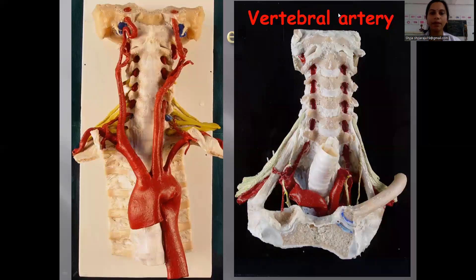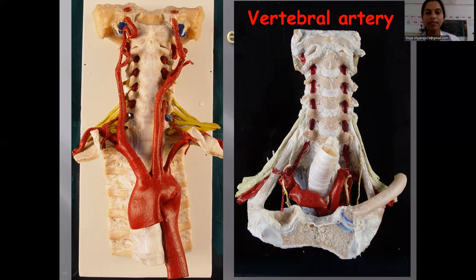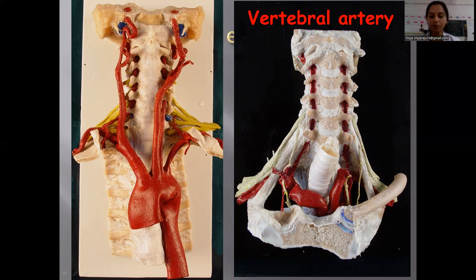Now coming to the vertebral artery: it arises from the first part of the subclavian artery and has four parts. The first part runs from the point of origin to the transverse process of the C6 vertebra. The second part passes through the foramen transversarium of the upper six vertebrae. The third part is found in the suboccipital triangle, and the fourth part leaves the suboccipital triangle to enter the base of the brain.